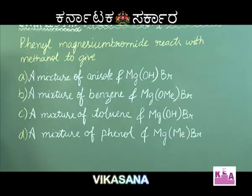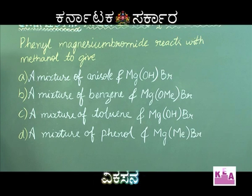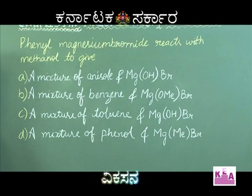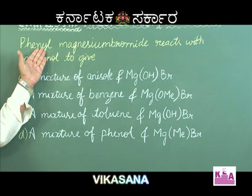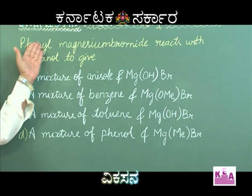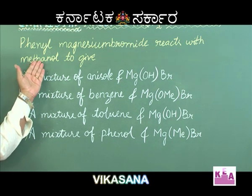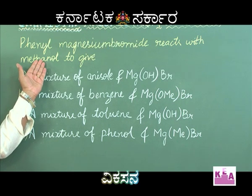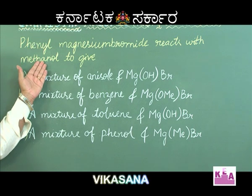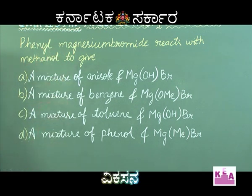The next question: phenyl magnesium bromide reacts with methanol to give — option A: a mixture of anisole and MgOHBr; option B: a mixture of benzene and MgOMeBr; option C: a mixture of toluene and MgOHBr; option D: a mixture of phenol and MgMeBr. Phenyl magnesium bromide is a Grignard reagent. Methanol is an alcohol, which contains active hydrogen.